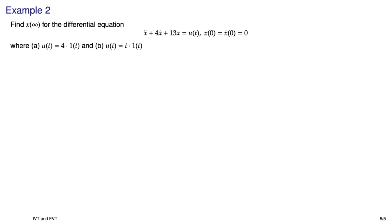Here's our second example. Imagine that you're faced with this differential equation. It has some nice initial conditions and an input u(t). And what you have to do is figure out what the final value or the steady state value of this is for a couple different inputs. In case a, the input is a step with amplitude four. And in case b, it's a ramp.